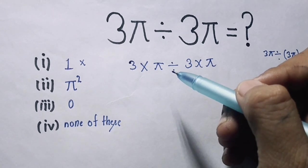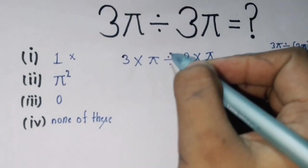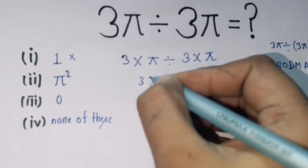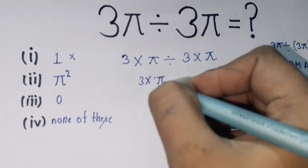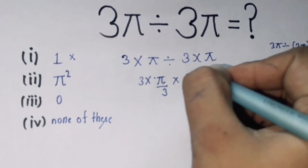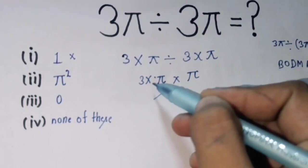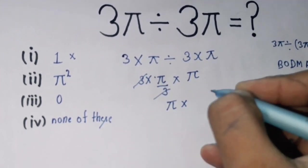We are firstly solving multiplication and division. We are firstly solving division: 3 multiply π divided 3 multiply π. This 3 will be cancelled, so π multiply π.